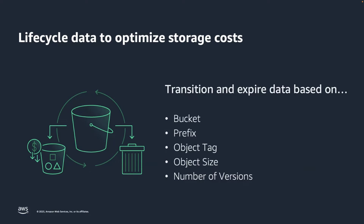Lifecycle policies can be configured to transition or expire all data inside a specific S3 bucket, or filters can be used to limit the lifecycle policy scope. Prefixes and object tags are often used to logically define unique data sets within an S3 bucket. Applying these filters to lifecycle policies allows unique tiering and retention logic to be applied independently to each of these defined data sets. Additionally, filters can be configured to limit the size of an individual object affected by the lifecycle configuration, or the number of previous versions to be retained when working with version-enabled buckets.